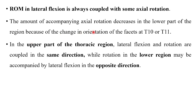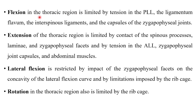In the upper thoracic region, lateral flexion and rotation are coupled in the same direction. In the lower thoracic region, rotation may be accompanied by lateral flexion in the opposite direction.